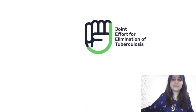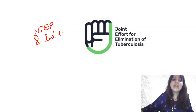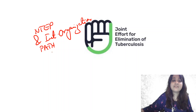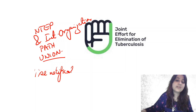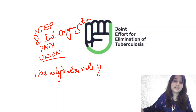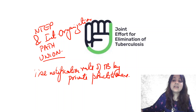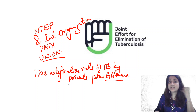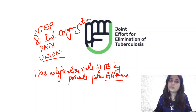One more logo for TB: JEET — Joint Effort for Elimination of TB. This is an effort by the National Tuberculosis Elimination Programme and international organizations such as PATH and others working for TB. The main aim is to increase the notification rate of TB by private practitioners, because many defaulters arise from the private sector. Private practitioners are given incentives — ₹500 on notification and ₹500 again on notifying treatment completion.